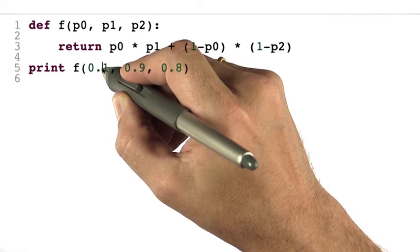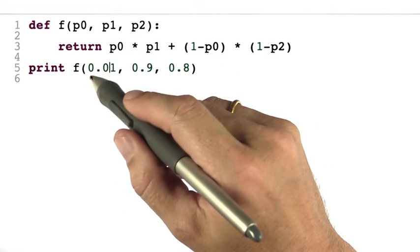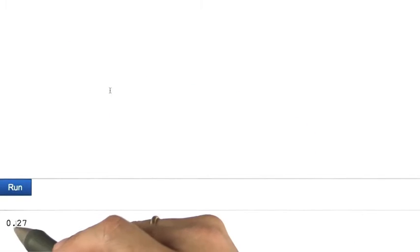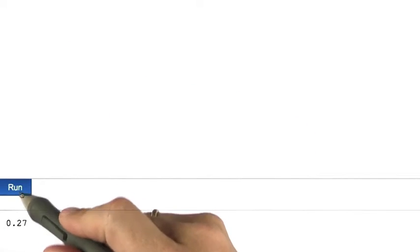Obviously, I can change these parameters. So suppose I make it much less likely to have cancer in the prior from 0.1 to 0.01. Then my 0.27 changes to 0.207.